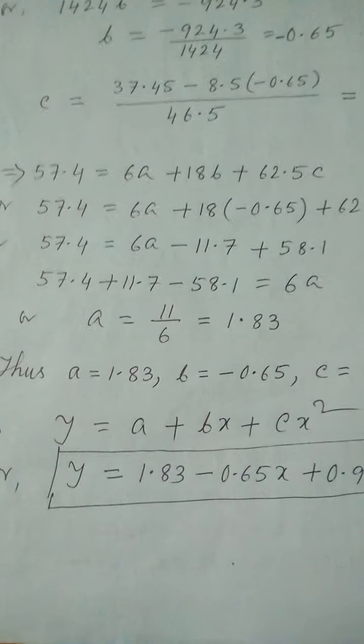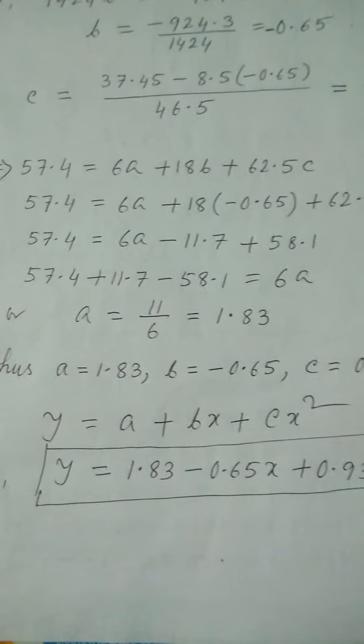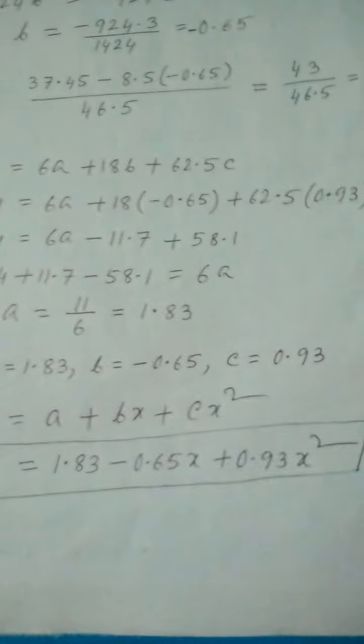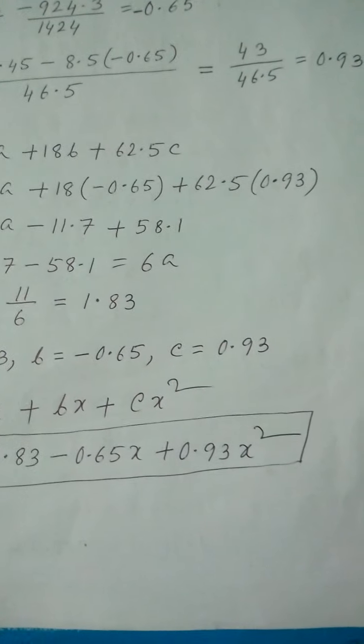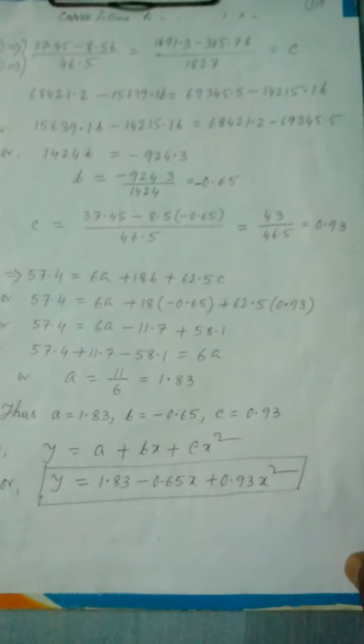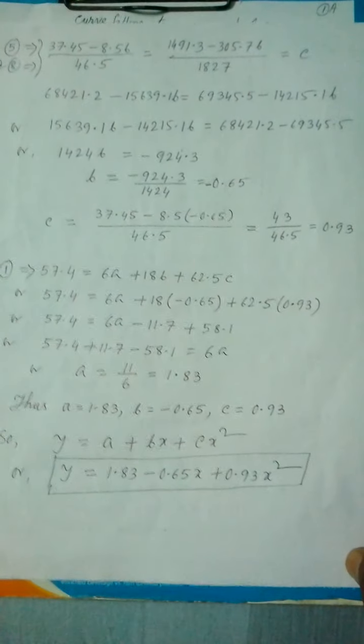I have solved it. The values are given: A equals 1.83, B equals minus 0.65, and C equals 0.93. Please check the values.